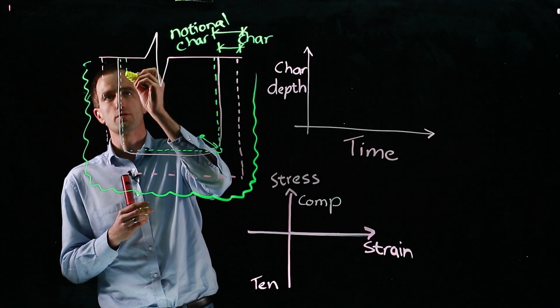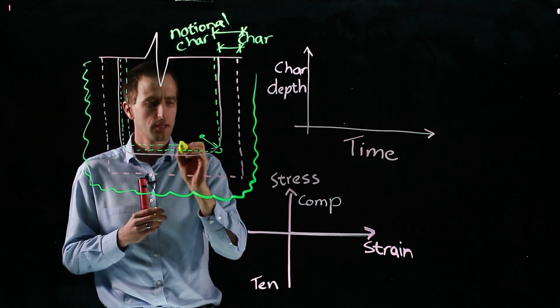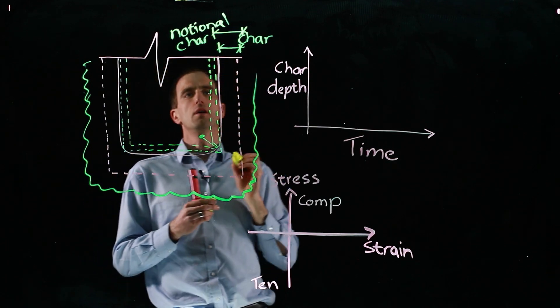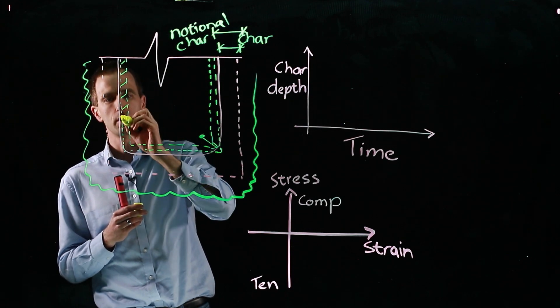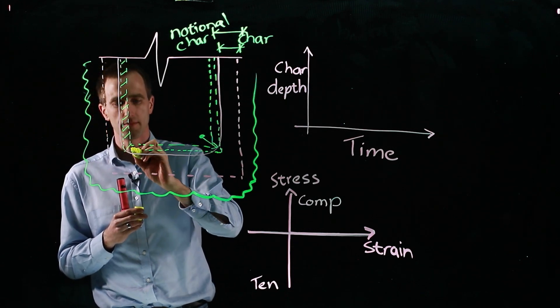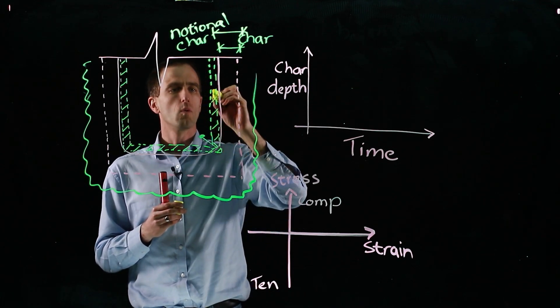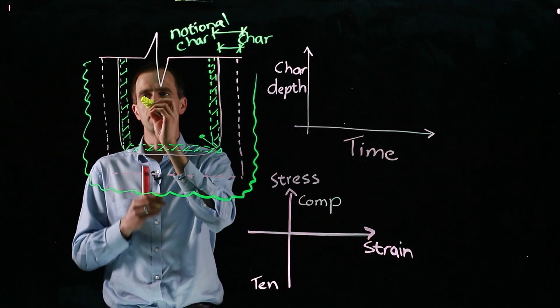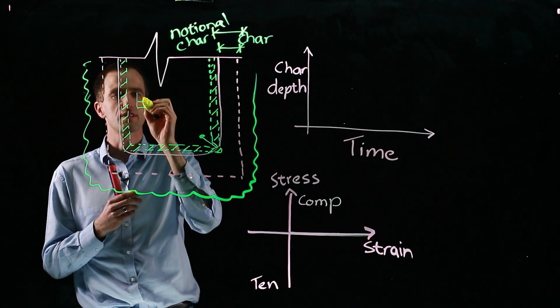So then what we have to do is reduce the section further like that. And we lose another bit of material. And the Eurocode recommends about seven millimeters for this area of zero strength, which we can't rely on. And once we've reduced it by the notional charring plus this extra bit of heated material, then we have an effective section.